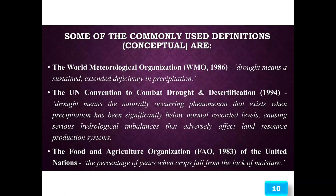Some commonly used conceptual definitions include: the World Meteorological Organization (1986) defines drought as a sustained extended deficiency in precipitation. The UN Convention to Combat Drought and Desertification (1994) defines drought as a naturally occurring phenomenon that exists when precipitation has been significantly below normal recorded levels, causing serious hydrological imbalance that adversely affects land resources and production systems.